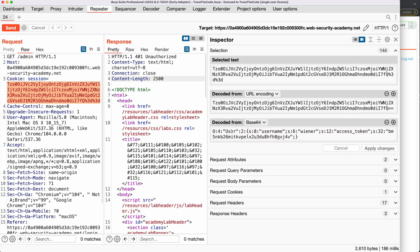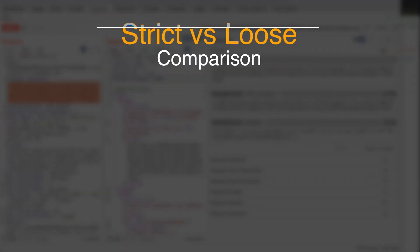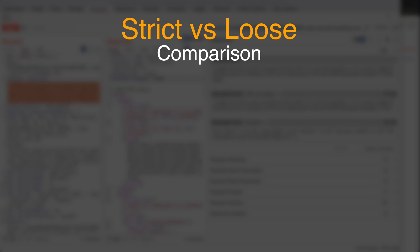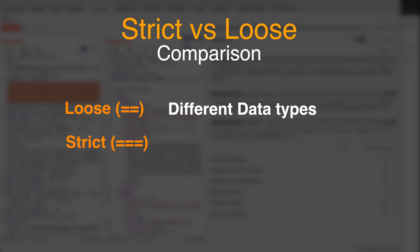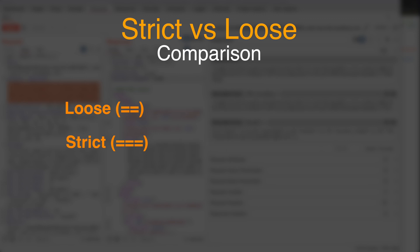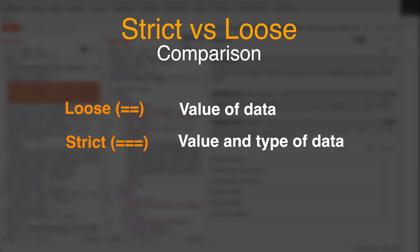Now we are interested to see if we can somehow modify the user object to exploit the insecure deserialization and get access to the admin panel without having the admin password. Before modifying the user object, we need to know how PHP code performs comparison between different data types. In PHP there are two options: loose comparison and strict comparison. The double equal sign represents loose comparison, used to compare values from different types such as integer and string. The triple equal sign represents strict comparison, used to compare data of the same type. Loose comparison only compares the value of data, while strict comparison compares both value and type.